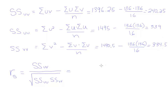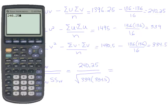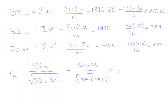We now have our three totals and can plug them into the expression for R_S. SS_UV is 240.25, divided by the square root of SS_UU times SS_VV, which is 339 times 334.5. Using the calculator: 240.25 divided by the square root of (339 times 334.5) gives us our Spearman's rank correlation coefficient.